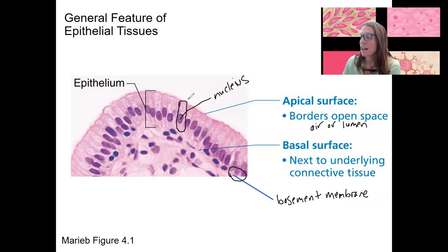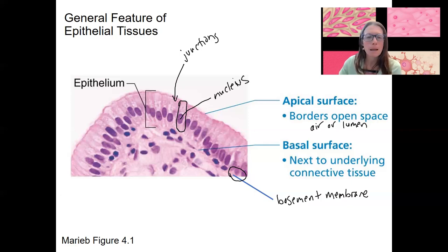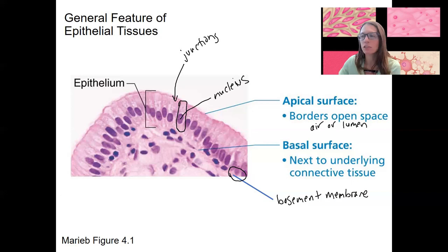We also need a way to connect cells next to each other, so I want to come back to types of junctions that link two different epithelial cells. We've already talked about the cell shapes.